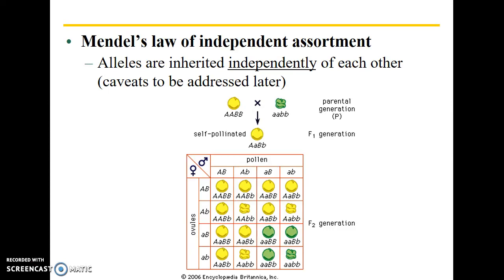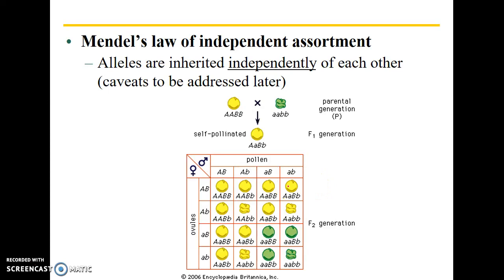What this is showing is we have a parental generation — the P generation — and we have a cross between smooth yellow and wrinkled green, and their corresponding genotypes. The F1 generation produces all smooth yellow offspring. And then in the F2 generation we start to see the variation and recombination coming out. We can end up with smooth green and also wrinkled yellow, for example. That indicates that the alleles for texture and color are inherited independently of each other.